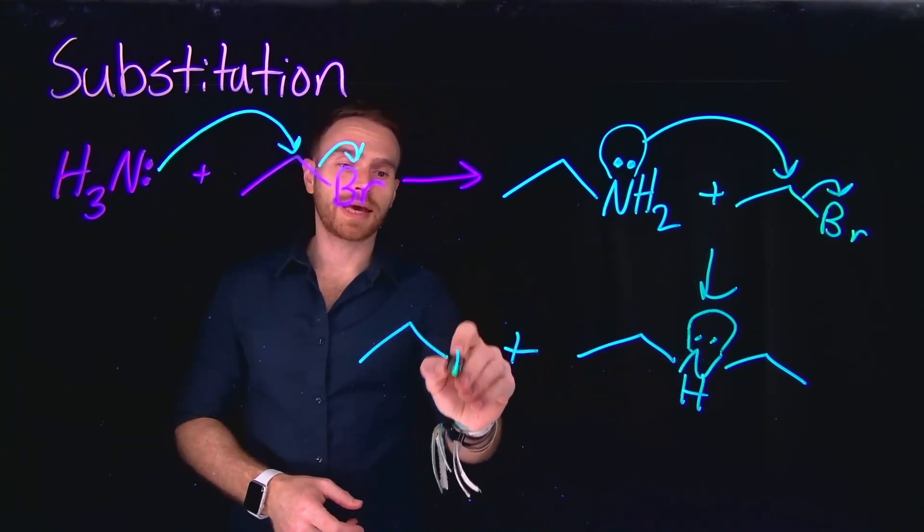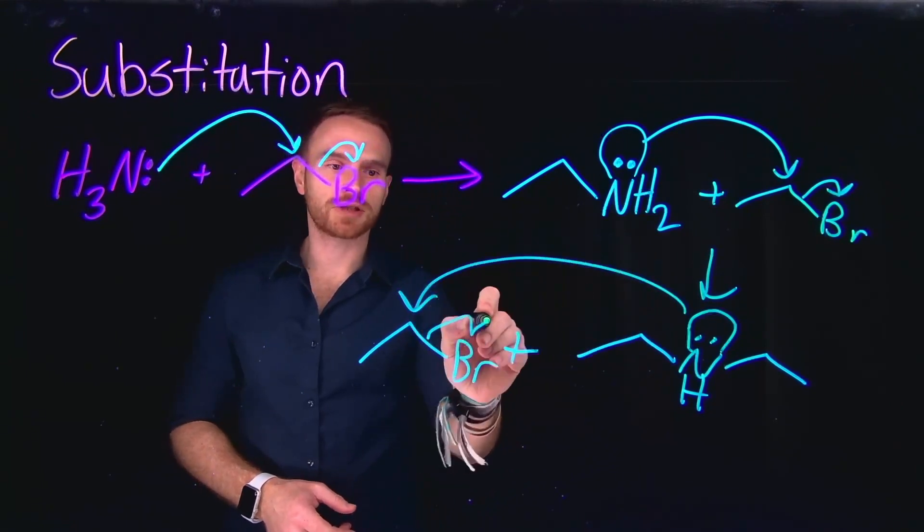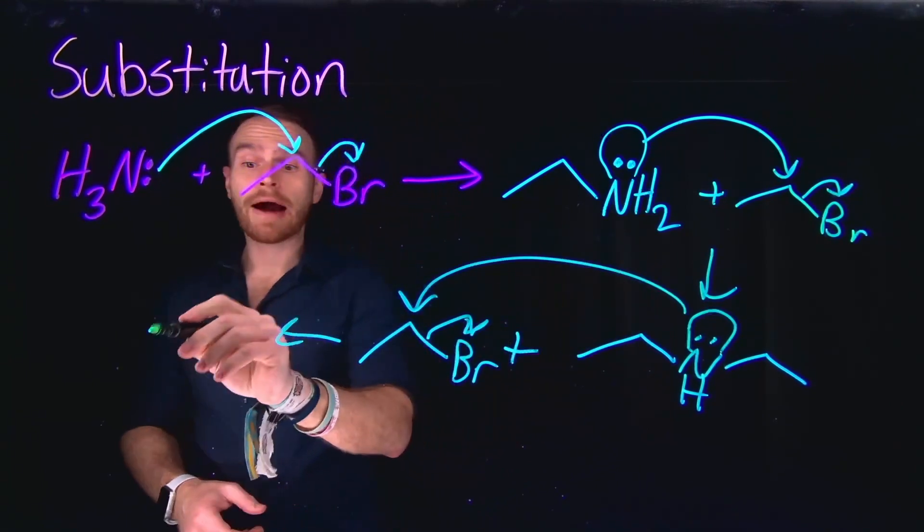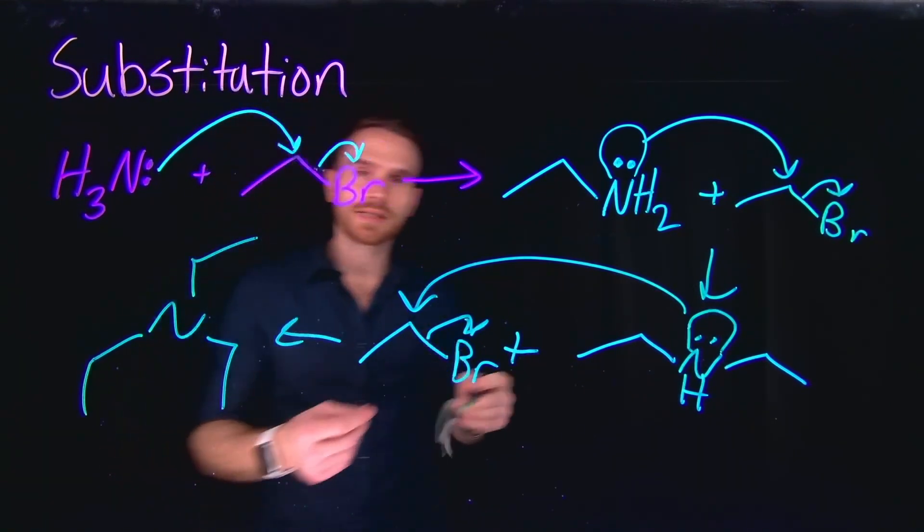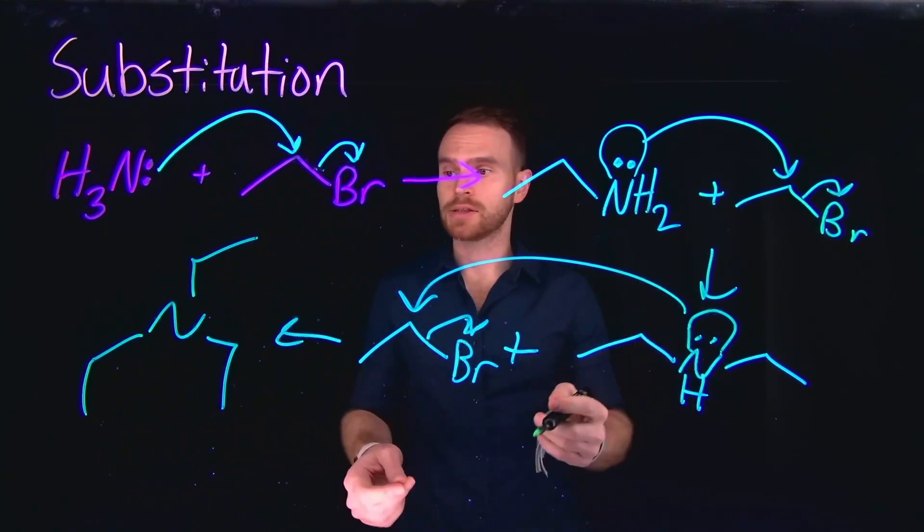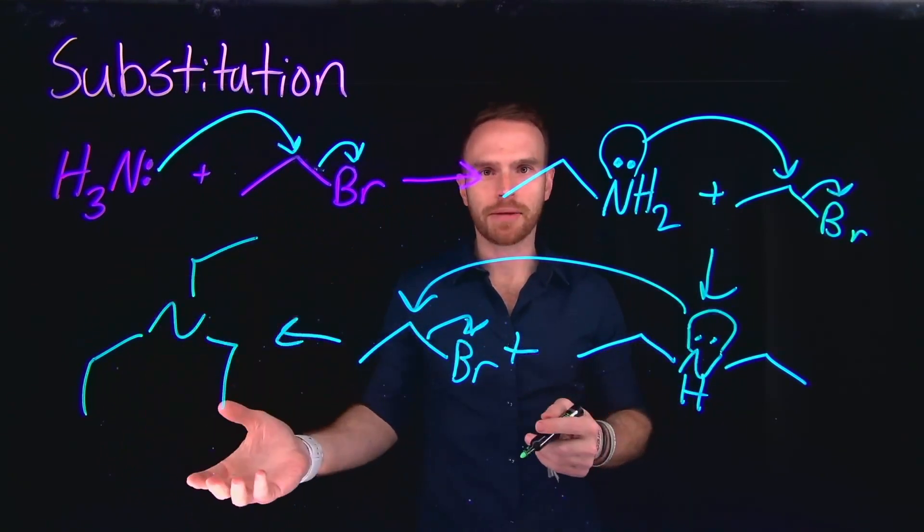So what will happen again is it will further alkylate, doing another substitution reaction, to now making a tertiary amine. And this is the problem with substitution reactions using amines and why it's not really the best way to form alkylated amines.